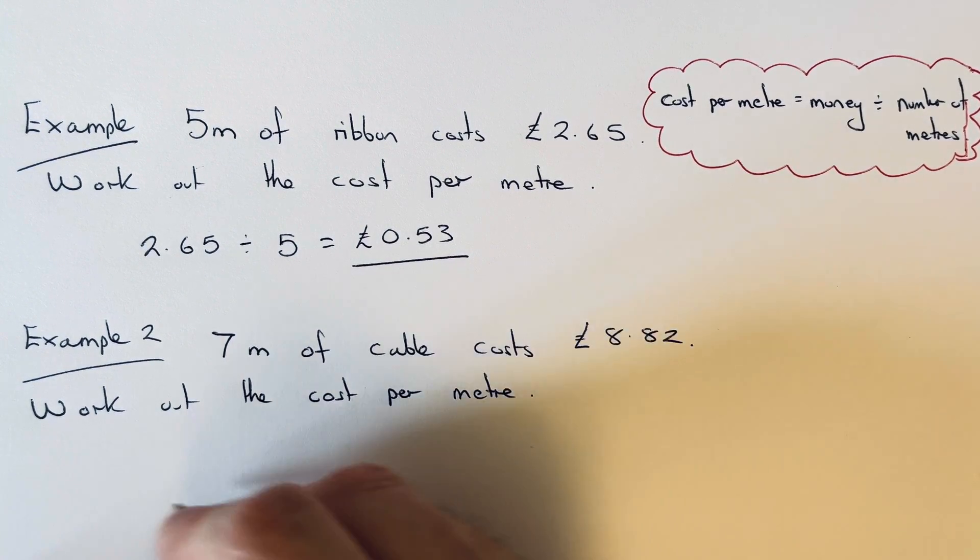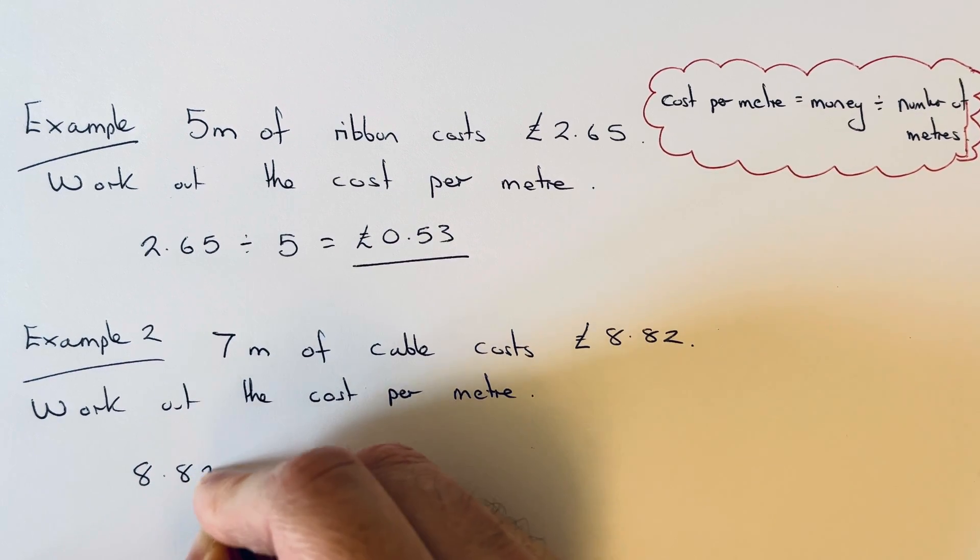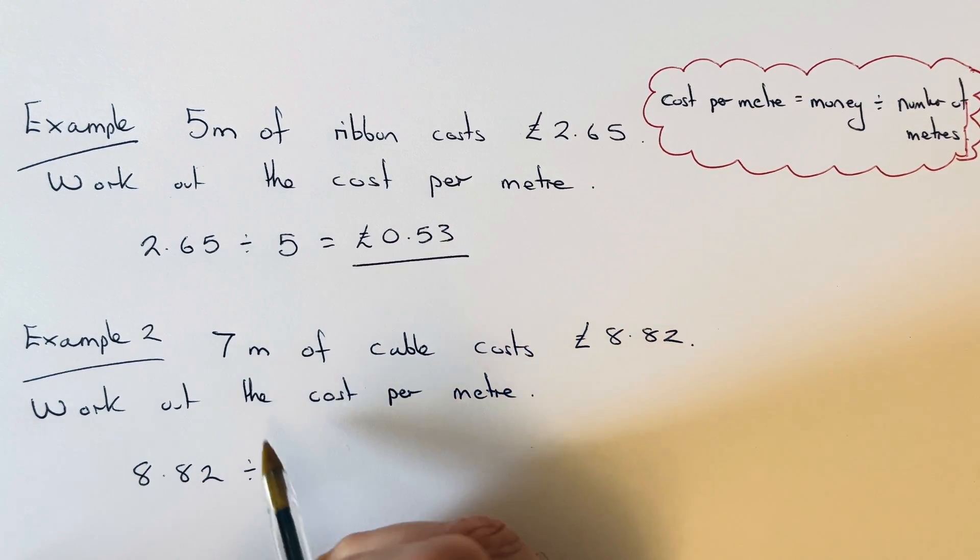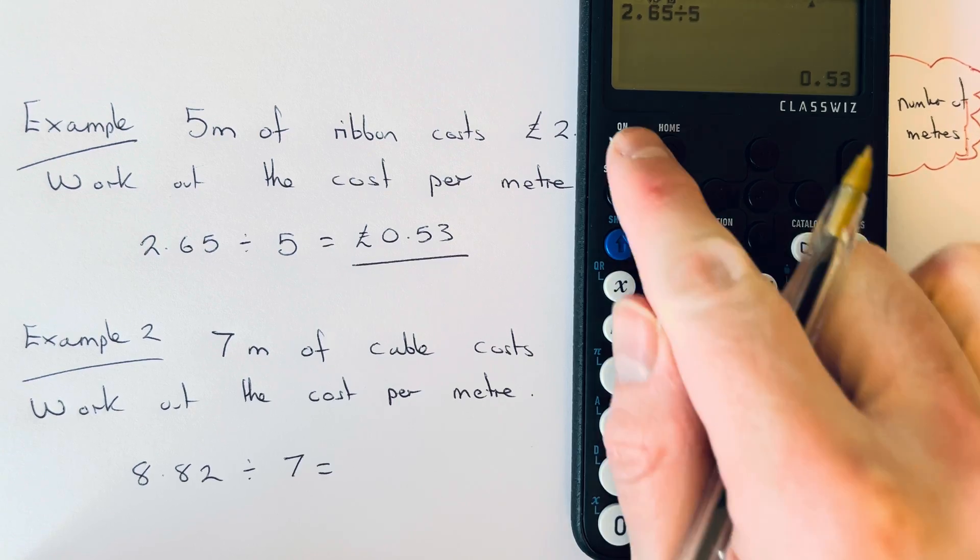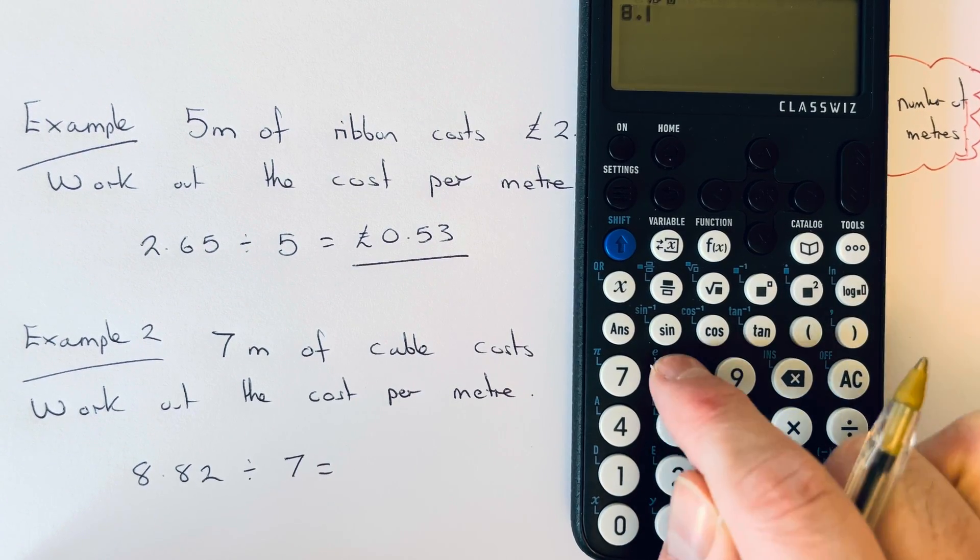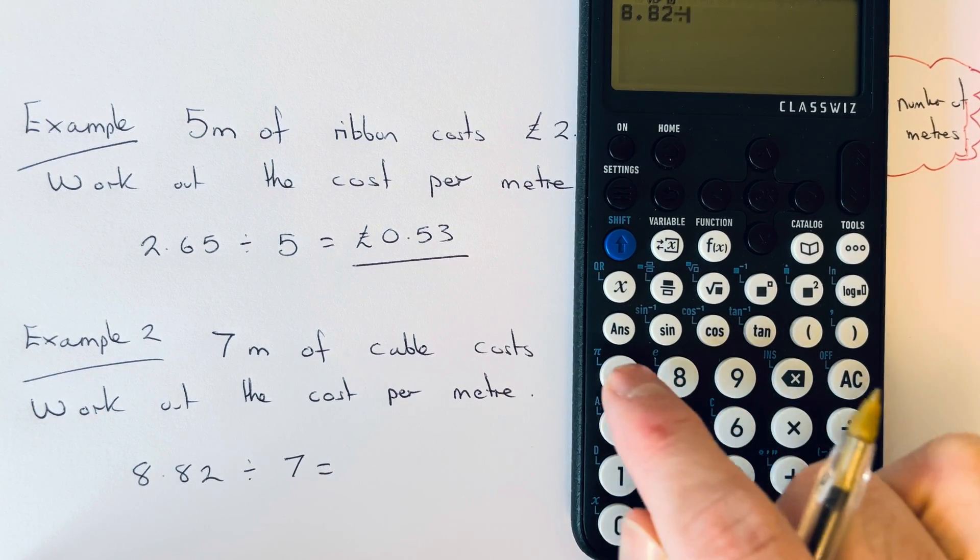the money, which is £8.82, and we divide that by the amount of meters which we have, which is seven. So again, if we get the calculator, we type in the price first and divide that by seven.